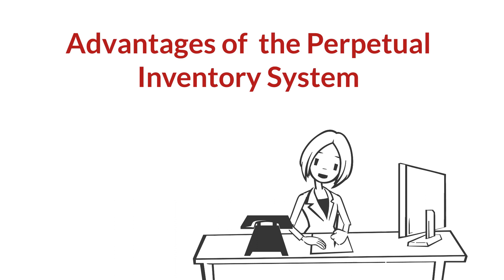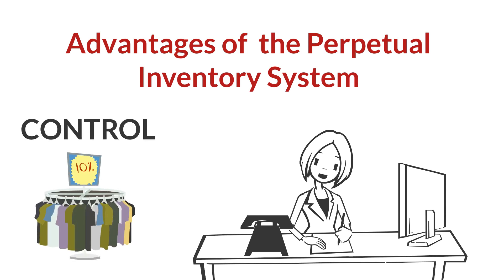In a perpetual inventory system, the accounting records continuously update, so we know the quantity and cost of the inventory that should be on hand at any time. A perpetual inventory system provides better control over inventories than a periodic system. Since the inventory records show the quantities that should be on hand, the company can count the goods at any time to see whether the goods on hand agree with the inventory records. If shortages are uncovered, the company can investigate immediately.